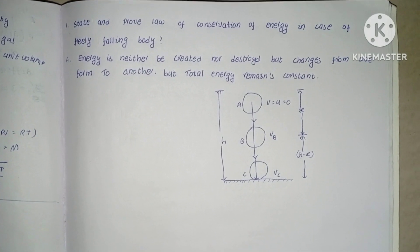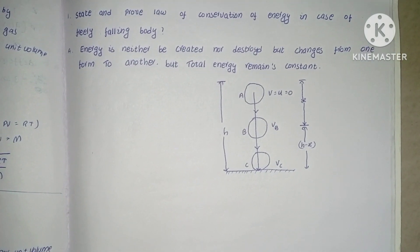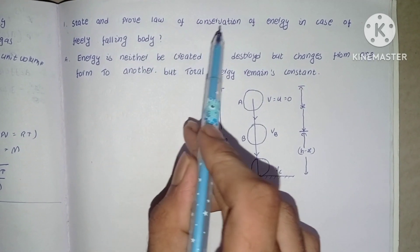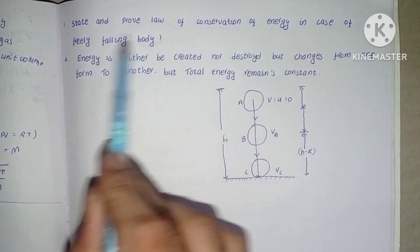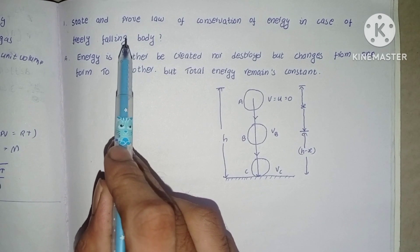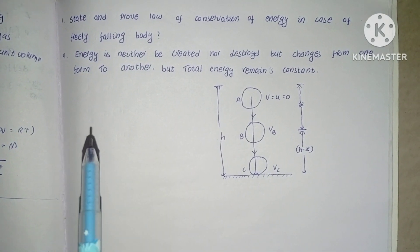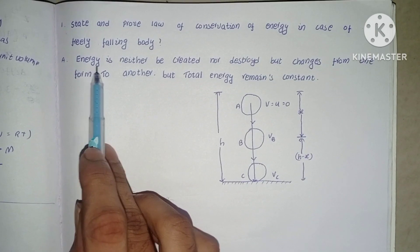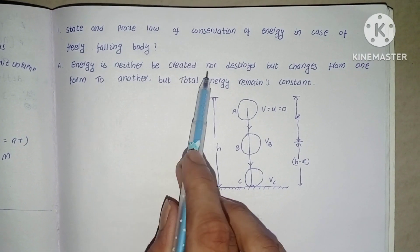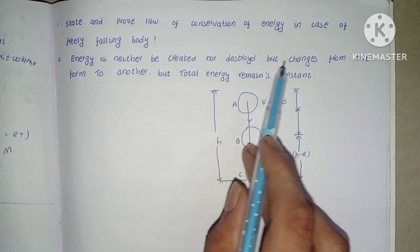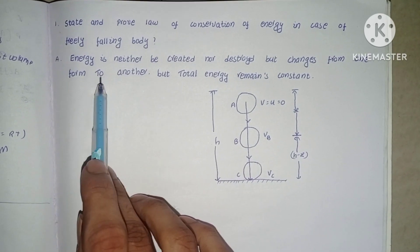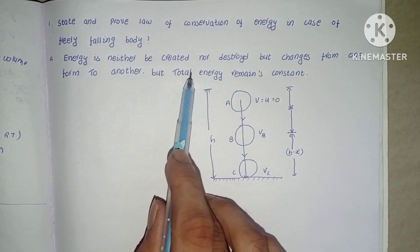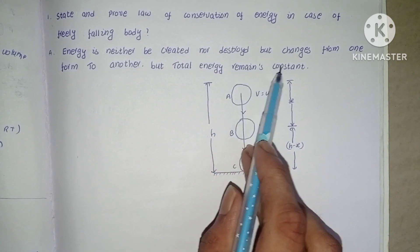Today's question: state and prove the law of conservation of energy in the case of a freely falling body. This is a most important question in the IPE examination. Energy can neither be created nor destroyed, but changes from one form to another, and the total energy always remains constant.